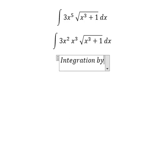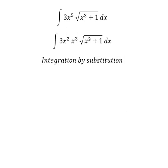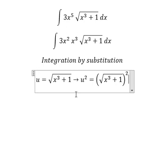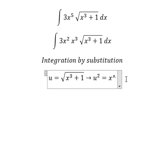For integration by substitution, I will set u equal to the square root of x³ + 1. Then we square both sides to cancel the square root, so u² = x³ + 1.